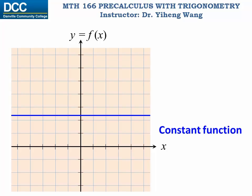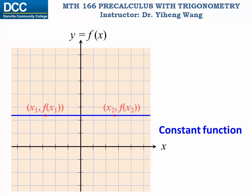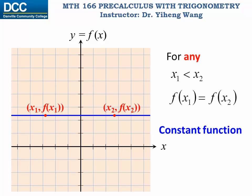Lastly, for the function to be constant, visually from left to right the function value stays the same. Algebraically, for any two points on this graph, if x1 is smaller than x2, then f(x1) must always equal f(x2).